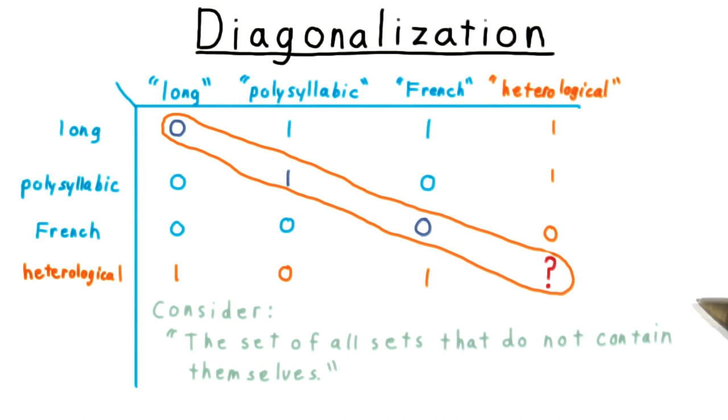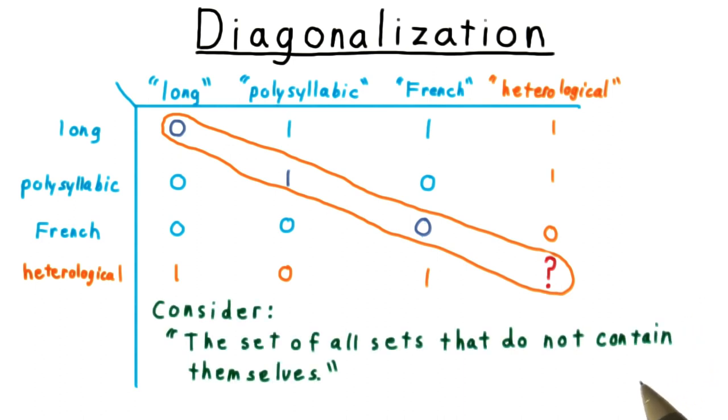Naively, one might think that a set could be an arbitrary collection, but what about the set of all sets that do not contain themselves? Is this set a member of itself or not?